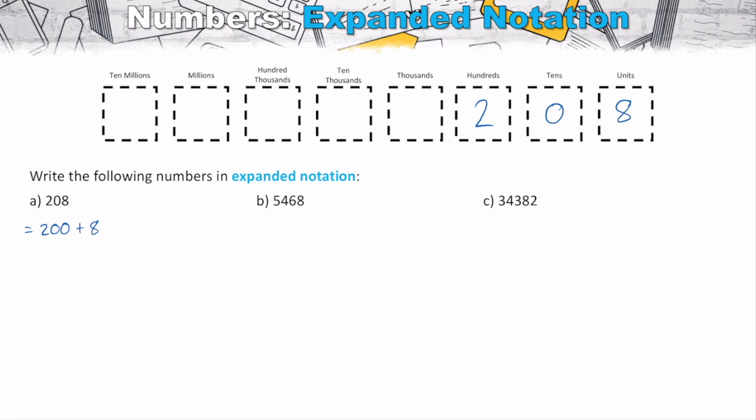Now you might sometimes see this as 2 times 100 plus 8 times 1. That's also breaking it down into expanded notation, just thinking about it in a different way. But both are representing the same thing. We're going to focus on the top line for now, but just understand that we can represent it as the second line as well.